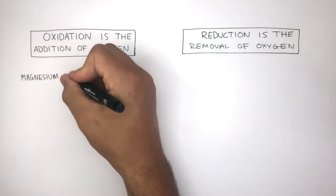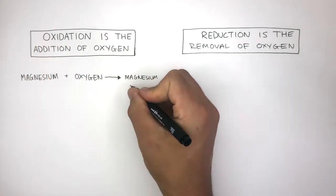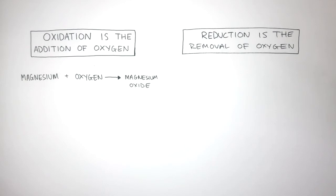When magnesium reacts with oxygen, magnesium oxide is formed. This is an example of oxidation because the oxygen has been added to the magnesium to form magnesium oxide. And by added, I mean oxygen has formed a chemical bond with magnesium.